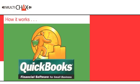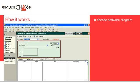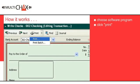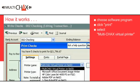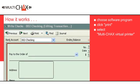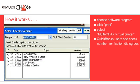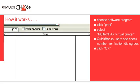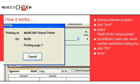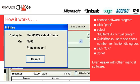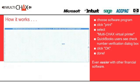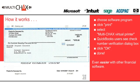Here's how it works with QuickBooks. Simply choose your software program of choice, click to print normally, and select the MultiChecks virtual printer. In this example, QuickBooks users will see the check number verification dialog box — click OK and you're done. It's even easier with other financial software. Take blank checks like this and make them look like this.